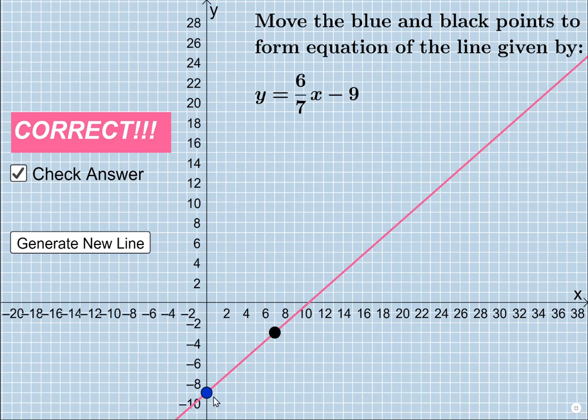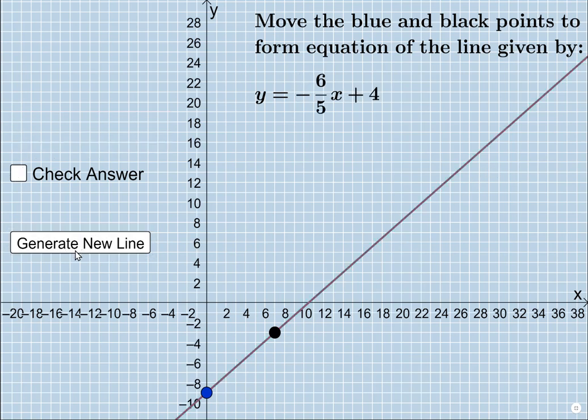And then you check your answer and it confirms and it says your pink line is right. If we get one wrong, it doesn't even put it in for you. It just makes you keep trying.